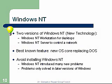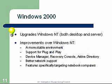Windows 2000 was a great upgrade — it upgraded both NT on the desktop and the server. Improvements over Windows NT included a more stable environment and support for plug and play. Before, when we installed new hardware, we had to do the configuration ourselves; today it automatically discovers, configures, and starts using new hardware. Other additions included Device Manager, Recovery Console, Active Directory, and better network support. Windows 2000 also added features specifically targeting notebook computers.